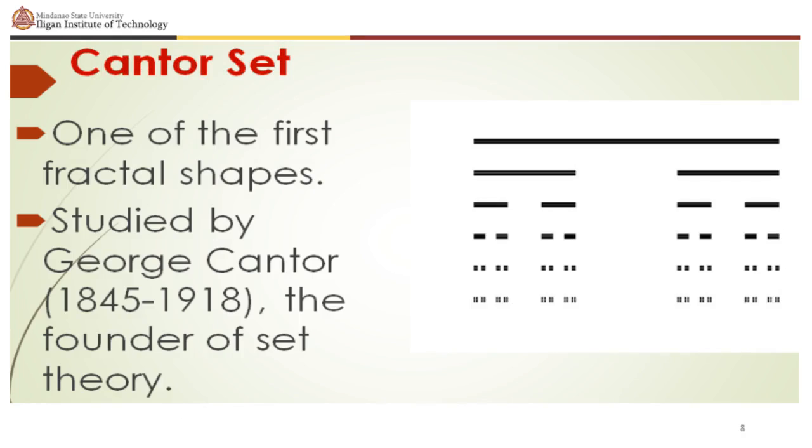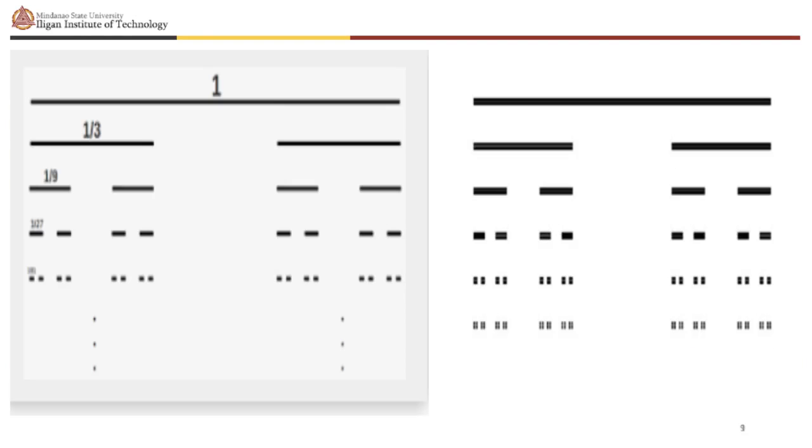The Cantor set is one of the first fractal shapes studied by George Cantor, 1845 to 1918, the founder of set theory. The Cantor set is obtained from the closed interval from 0 to 1 by removing the middle third from the interval, then the middle third from each of the two remaining sets, and continuing the process indefinitely.